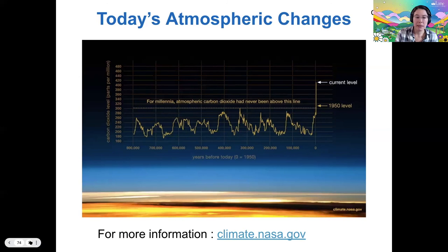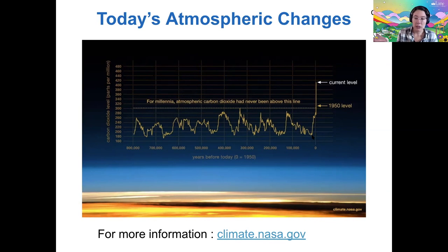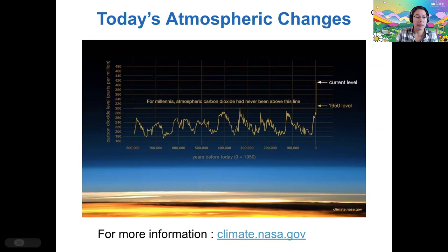Looking at atmospheric carbon dioxide: there are lots of different ways that historic CO2 concentrations in the atmosphere are measured. Going back about 800,000 years, there have been fluctuations up and down due to changes in the Earth's vegetation, changes in weathering, etc. But in the industrial age, atmospheric carbon dioxide has boosted a lot because we are the first species in the history of the planet to dig up fossil fuels and burn them for our industrial needs. NASA's website has a whole bunch more information if you're curious on how this is happening.